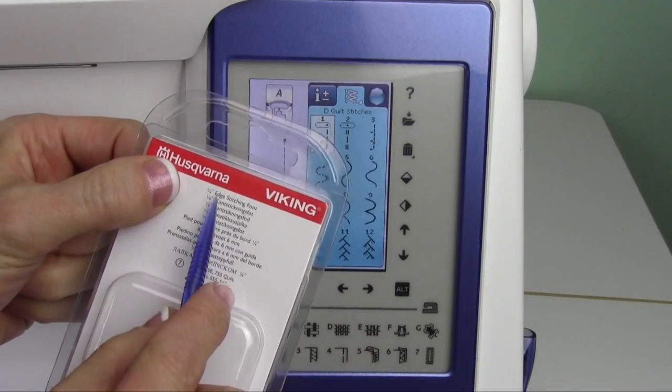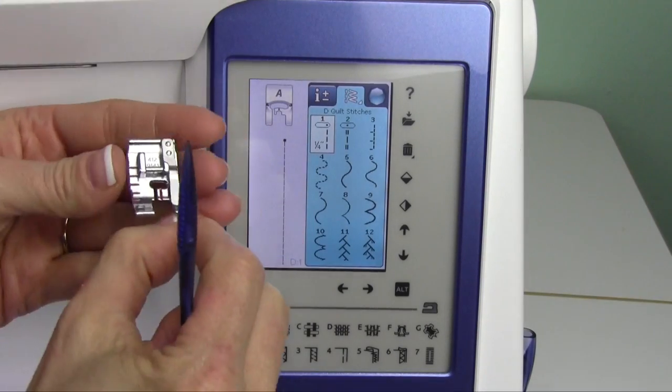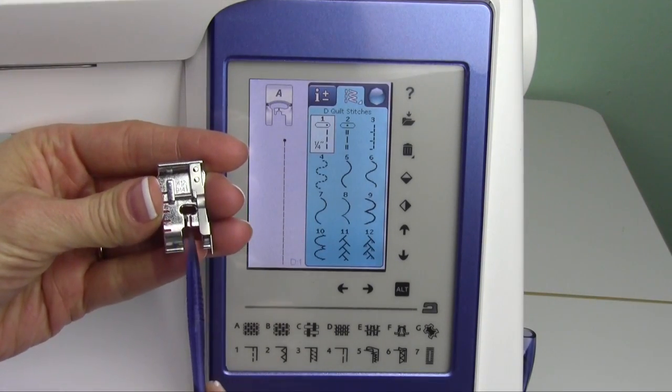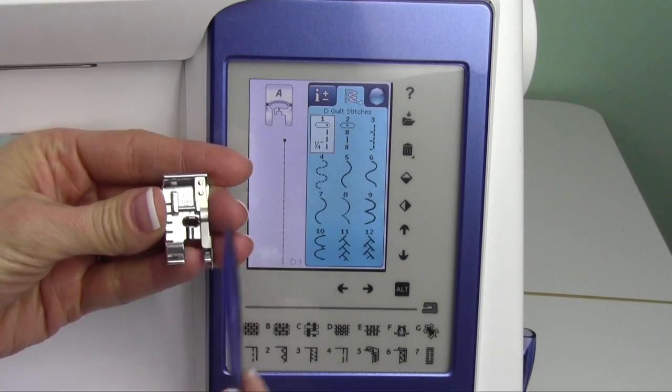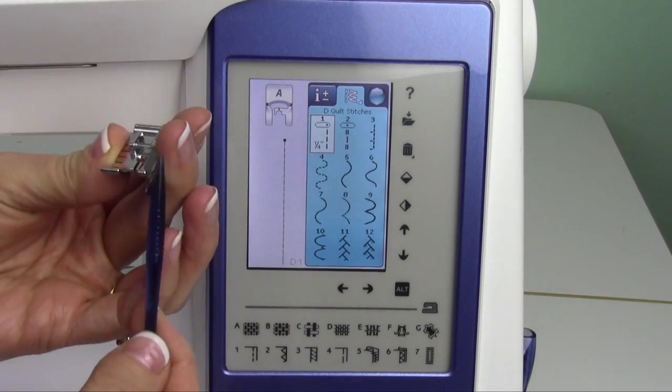It's called the quarter inch edge stitching foot. One of my favorites. This is the one I like. With this red line right here, it is lined up with the needle at this stitch and it has the blade.